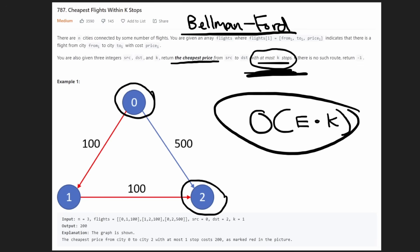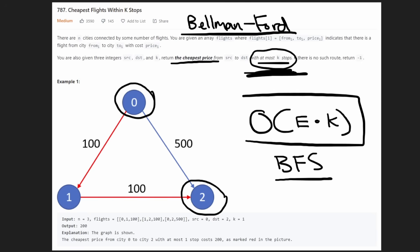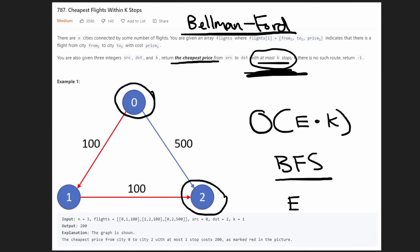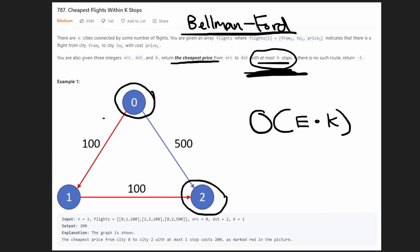The way it works is similar to a breadth-first search approach. In general, Bellman-Ford runs in E times V time, where V is the number of vertices and E is the number of edges. But in this case, we're given a condition of K, so the time complexity is just E times K. Looking at this example problem, what is the solution?